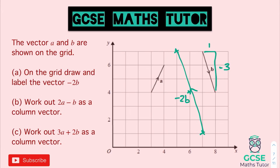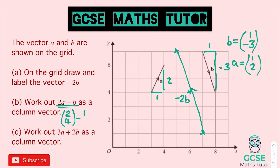For parts B and C we need these vectors as column vectors. Vector B is 1 across and 3 down, so 1 over minus 3. Vector A is 1 across and 2 up, so 1 over 2. For 2A minus B: doubling A gives 2 over 4, and we take away B which is 1 over minus 3. So 2 take away 1 gives 1 on top, and 4 take away negative 3 adds the 3, giving 1 over 7.